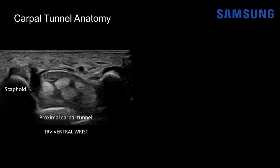On ultrasound, here at the proximal carpal tunnel, the scaphoid bone and pisiform bone are visible. You can see the normal curvilinear appearance of the bony cortex — the rest of the bone is shadowed out. This curvilinear structure is the flexor retinaculum, and just behind that is the median nerve. Deep to that we have the flexor tendons — the flexor digitorum superficialis and flexor digitorum profundus — with their normal echogenic compact fibrillar structure. The flexor carpi radialis tendon lies directly over the scaphoid bone, which you can use as a landmark.